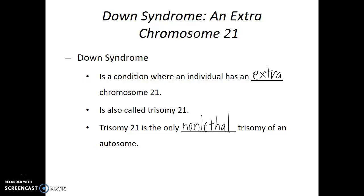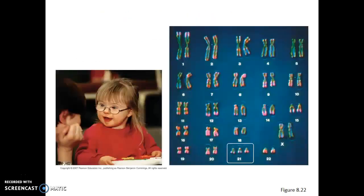Having three copies of any other autosome would be fatal. This would typically result in a miscarriage early in pregnancy, because having an abnormal number of chromosomes — especially for the autosomes — is very serious. Here we see a karyotype of a human female who has Down syndrome. We know it's a female because the two sex chromosomes are the same size and are homologous. And we know this individual has Down syndrome because they have three copies of chromosome 21 instead of the regular two copies.